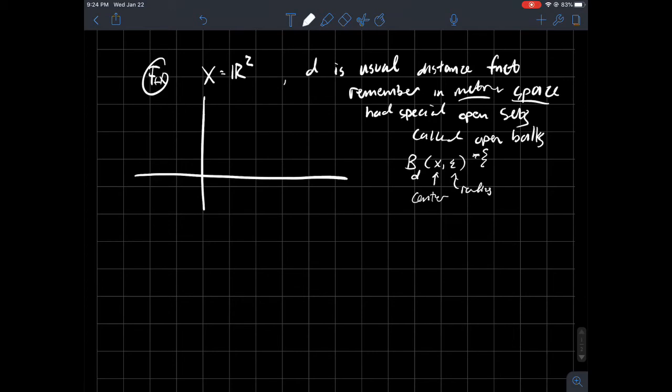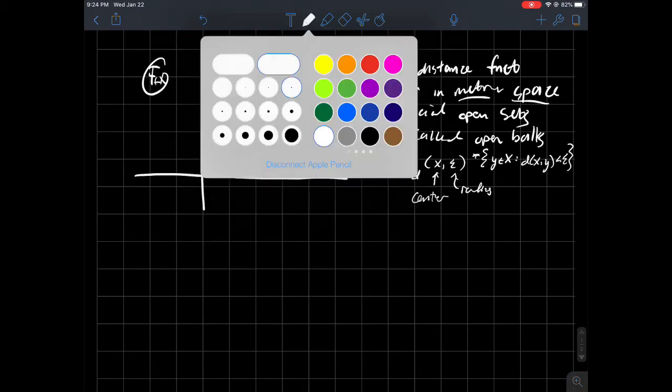And so what is this then? This is the set of all Y that are also in there, such that the distance between X and Y, the center and Y, is smaller than epsilon. And so what I'm thinking about then is if I'm in the plane, what are some open sets that are in the plane?